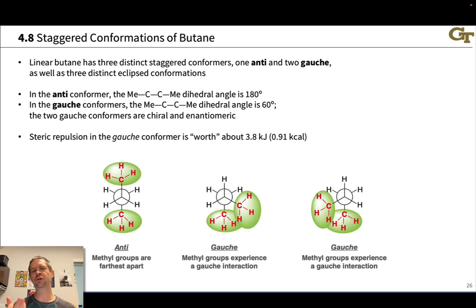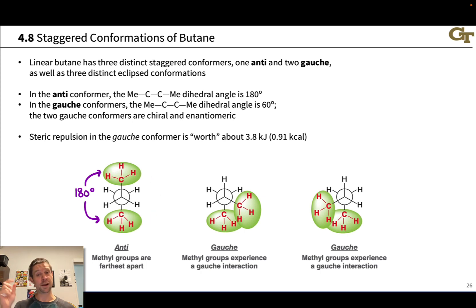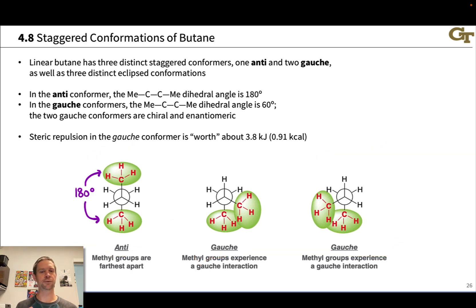Let's start by looking in more detail at the energy minima, the staggered conformations of butane. Linear butane has three distinct staggered conformations. One is called anti, and the other two are called gauche. The anti-conformer is the global minimum in energy — the most stable conformation — and in this conformation the dihedral angle between the carbon-methyl bonds in a Newman projection is 180 degrees. This 180-degree dihedral refers to the angle between the two methyl groups on the ends of the four-carbon chain, and the methyl groups are relatively far apart, which makes this conformation relatively stable. There is essentially no steric interaction between these two methyl groups.